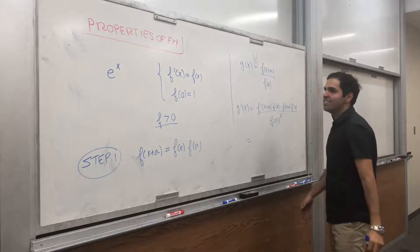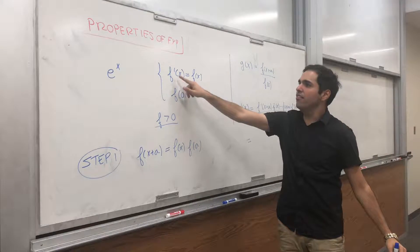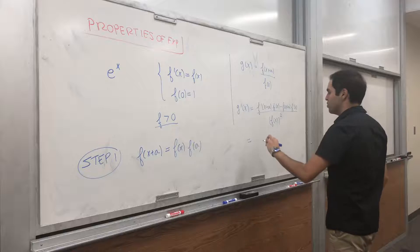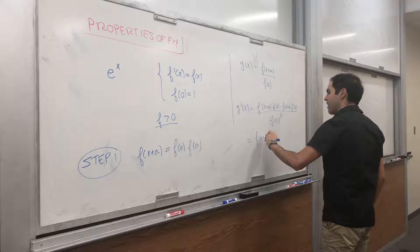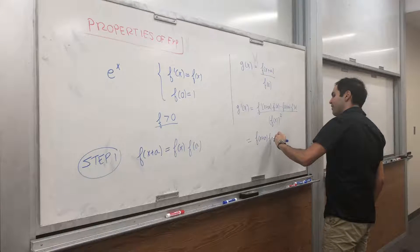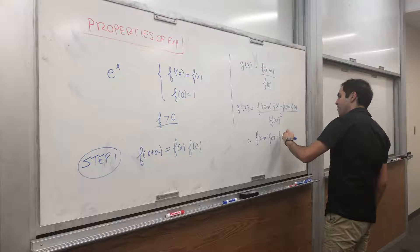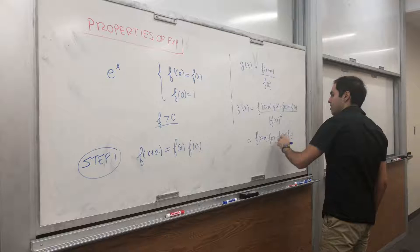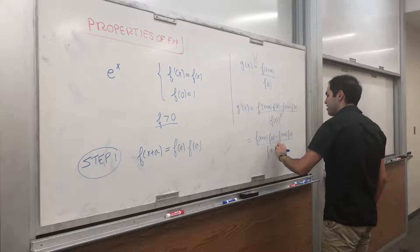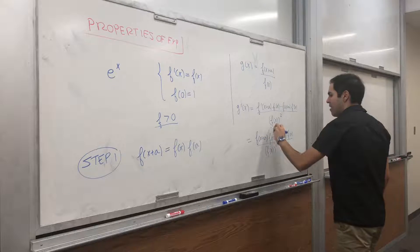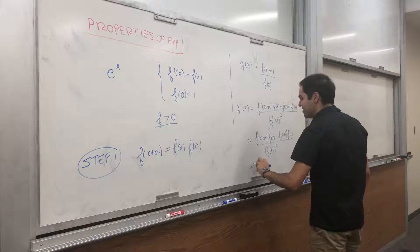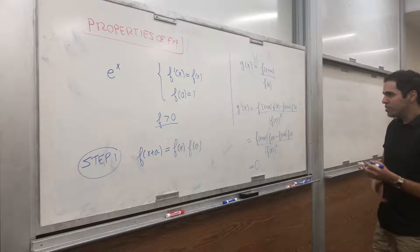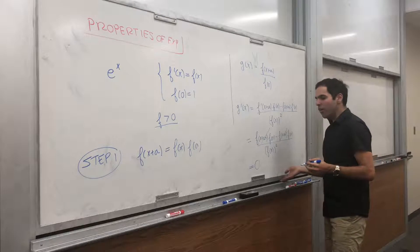But again, what is the defining property of f is that f prime equals to f. So this is f of x plus a times f of x minus f of x plus a times f of x over f of x squared. And this disappears. So, g prime equals to zero.